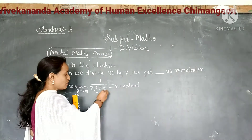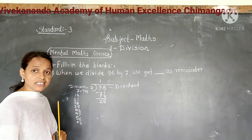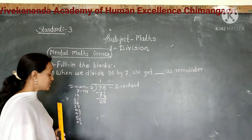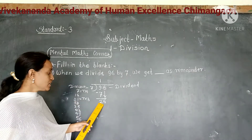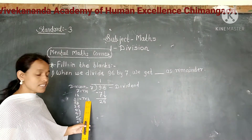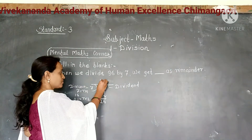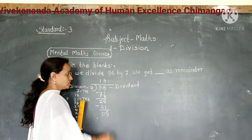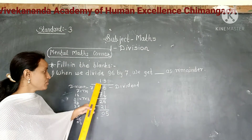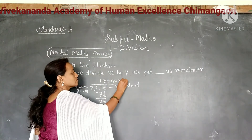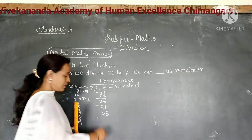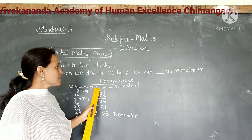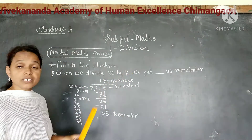Next digit 6, we bring down. Now we divide 26 by 7. But 26 is not in the multiplication table of 7. So less than 26 is 21. So we divide 26 by 7, we get 3 as a quotient. Write 3 as a quotient in the ones place. So when we divide 96 by 7, we get 5 as a remainder. Here our answer is 5.